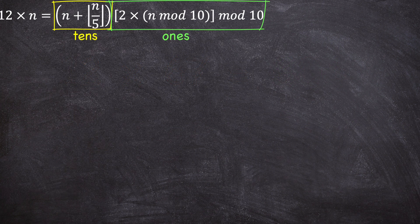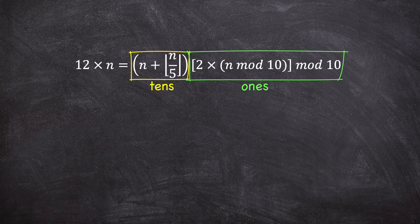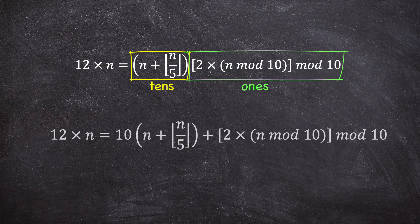An important thing to note is that this formula for calculating 12 times n is two separate formulas combined: one for calculating the number of tens, one for calculating the number of ones. It's not a product of these two things — it's just the order you would write the numbers in. If we wanted a formula that actually calculated the answer, we would have to multiply the number of tens by 10 and then add the ones.